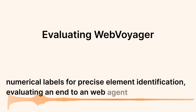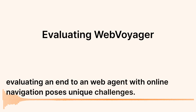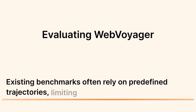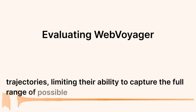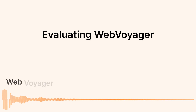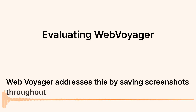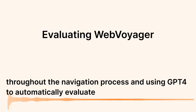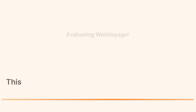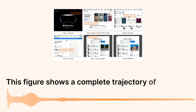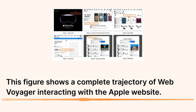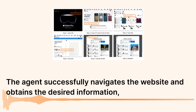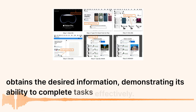Evaluating an end-to-end web agent with online navigation poses unique challenges. Existing benchmarks often rely on predefined trajectories, limiting their ability to capture the full range of possible strategies. Web Voyager addresses this by saving screenshots throughout the navigation process and using GPT-4V to automatically evaluate the trajectories and final results. This figure shows a complete trajectory of Web Voyager interacting with the Apple website, demonstrating its ability to complete tasks effectively.